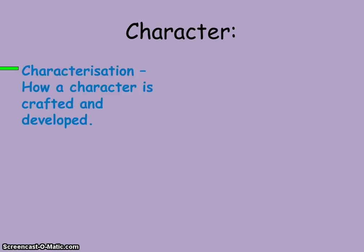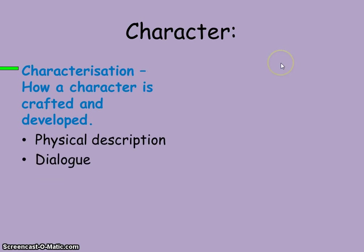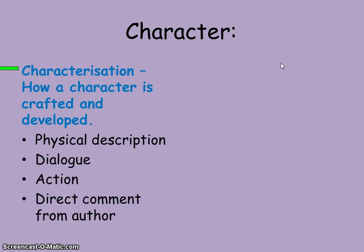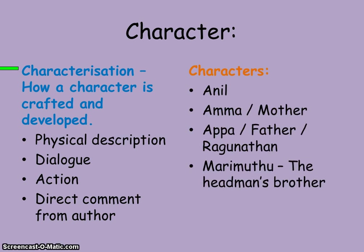Moving on, let's have a look at characterisation. The key things you need to consider are: physical description, dialogue, action, and the actual comment from the author — because the author might be putting words into a character's mouth that they want to put across. Even though it's the character speaking, sometimes in stories or in poetry the author will be telling us something through that character.